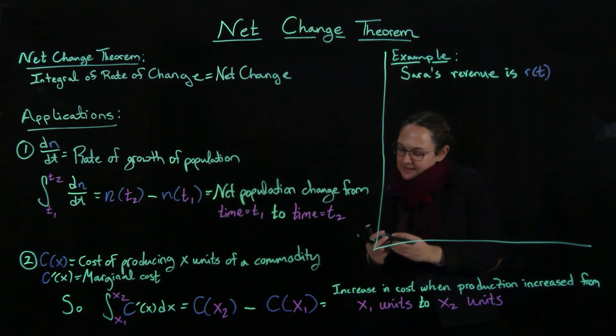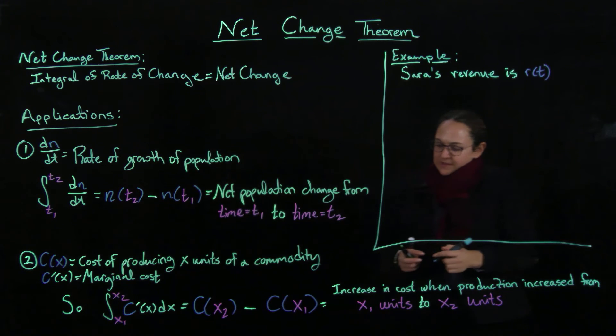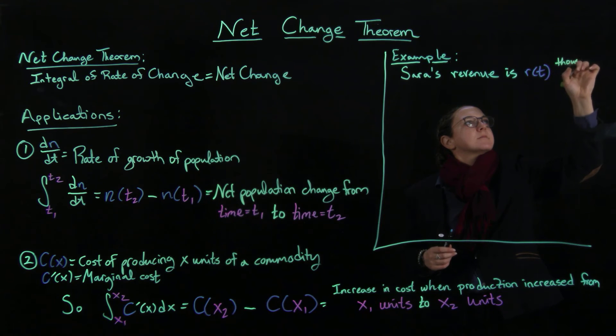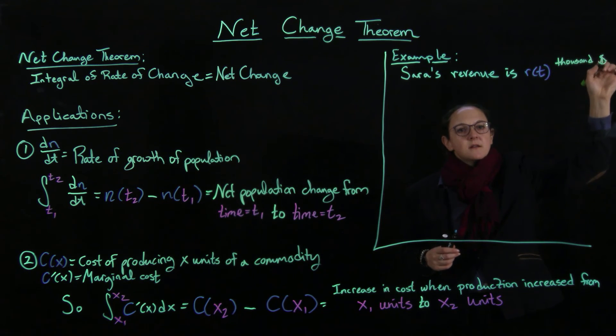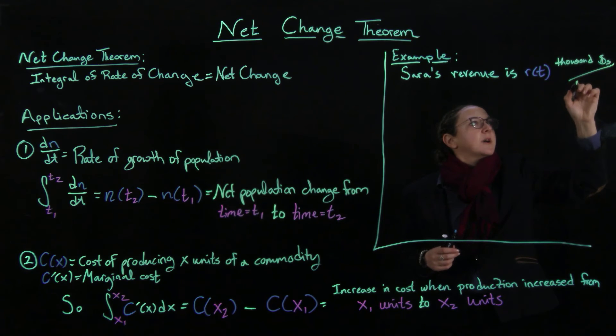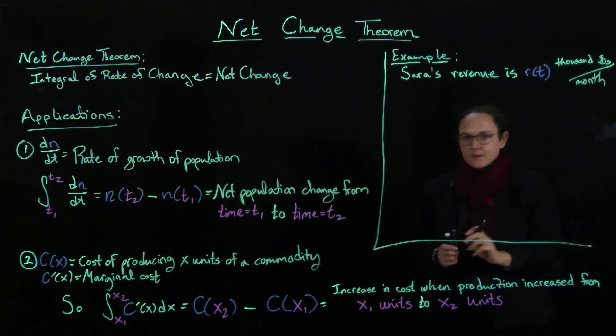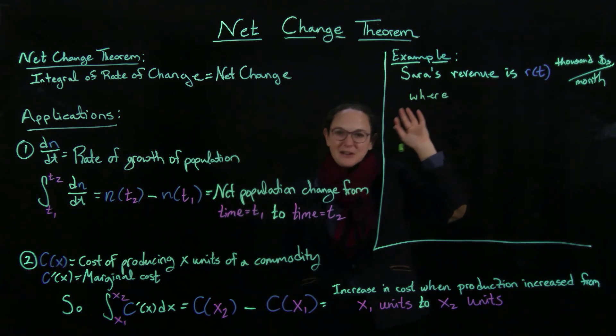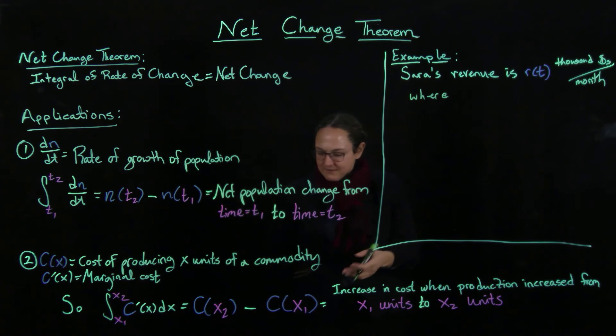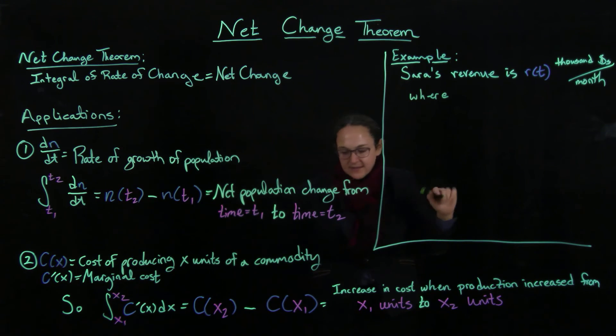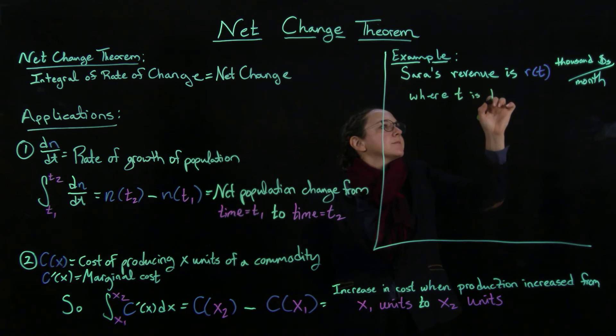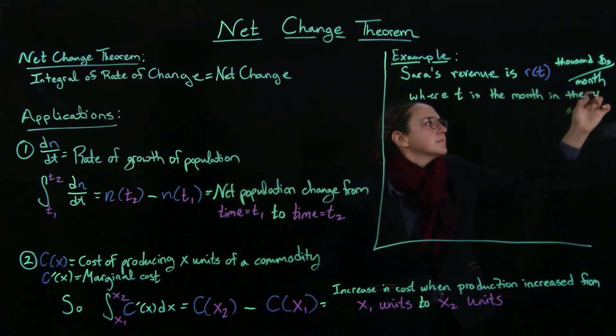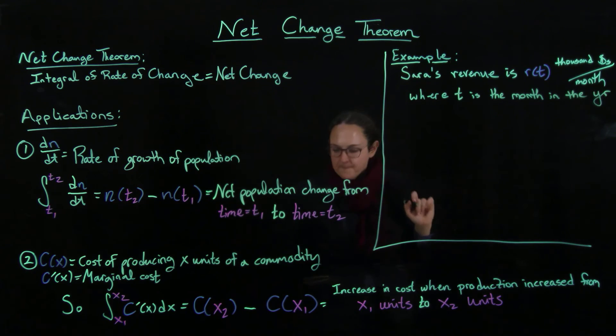Okay, so R of T is going to be, so this is in thousands of dollars per month. So the revenue is R of T, thousand dollars per month. And you're much better, I've found, at keeping track of units than me. I've been going into the feedback group about units. Yes, fair enough. Where T is the month in the year.